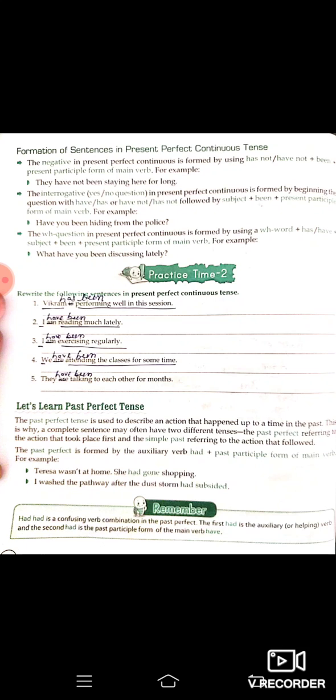Formation of sentences in present perfect continuous tense. The negative is formed by using 'has not' or 'have not been'. Example: 'They have not been staying here for long' — woh bahut dinon se hamare saath nahi hain.